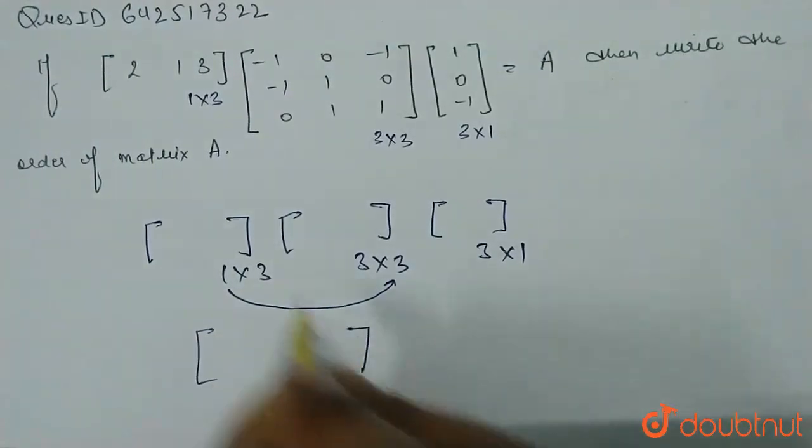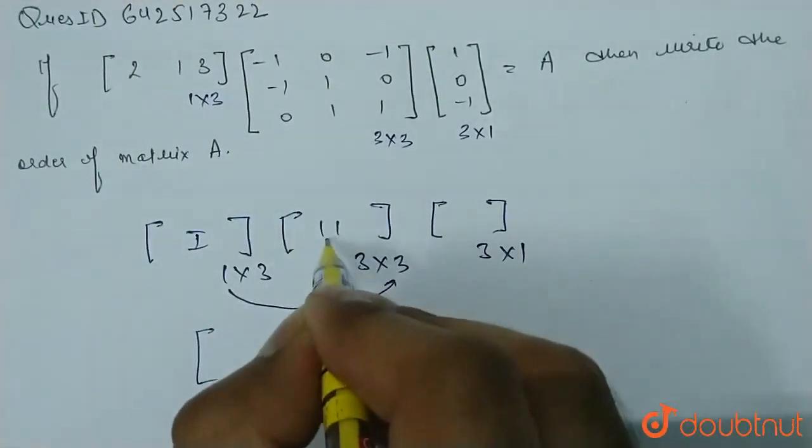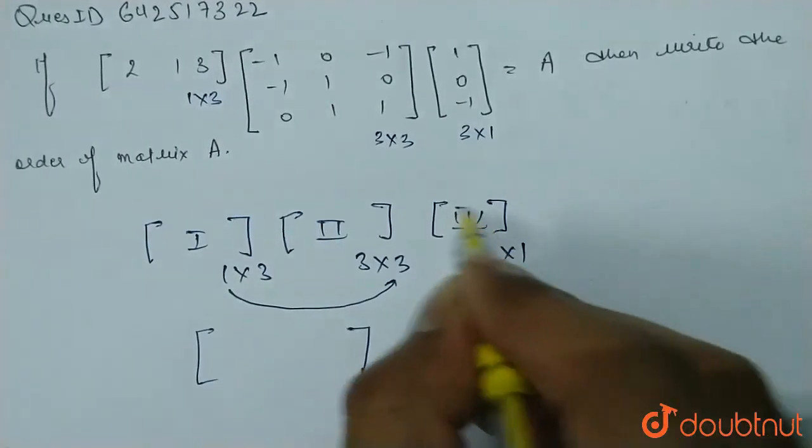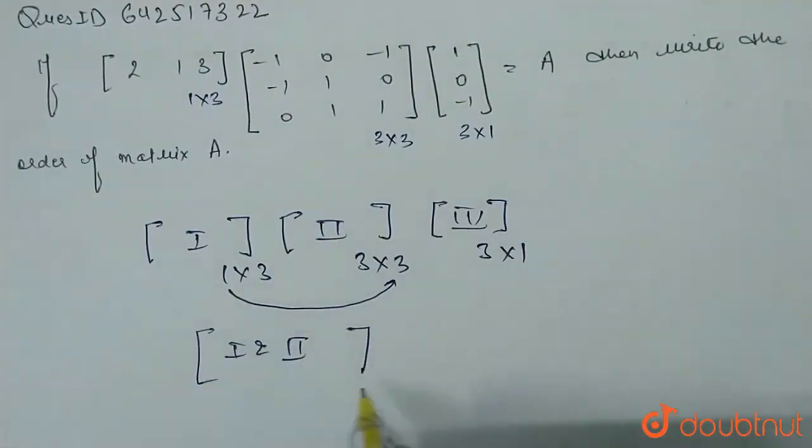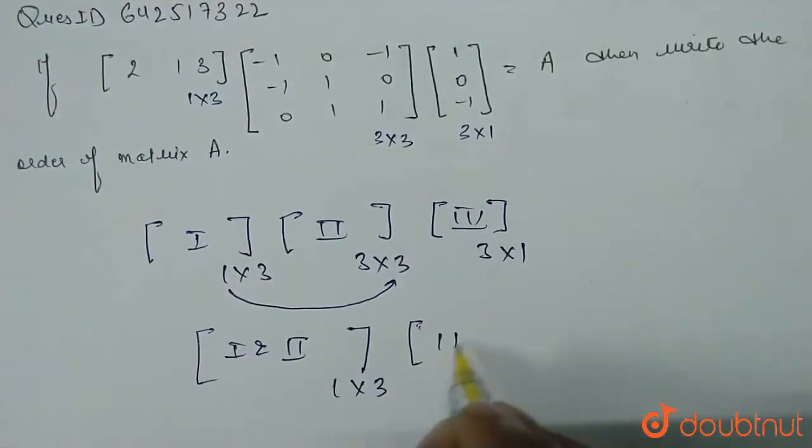So, when we multiply, this is first, this is second, this is third matrix. So, for first and second, the order will be 1 cross 3. And the third matrix has order 3 cross 1.